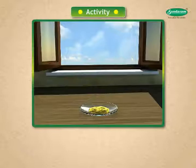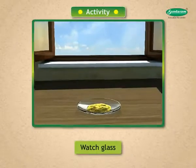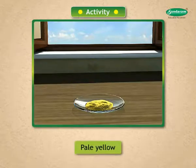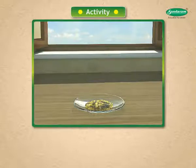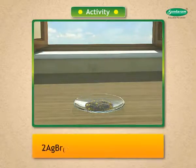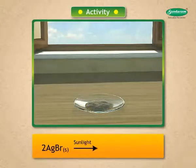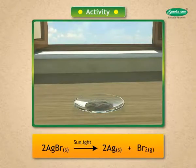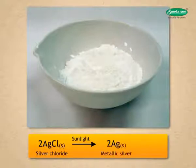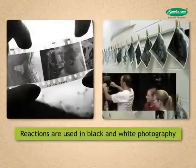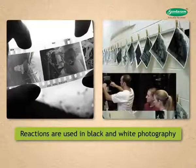Take a spatula full of silver bromide on a watch glass. Note its color — it is pale yellow. Place the watch glass in sunlight and observe the color after some time. The color turns to gray. 2AgBr(s) in the presence of sunlight gives 2Ag(s) + Br₂(g). A similar reaction is given by silver chloride: 2AgCl(s) in the presence of sunlight gives 2Ag(s) + Cl₂(g). These reactions are used in black and white photography during the process of developing.